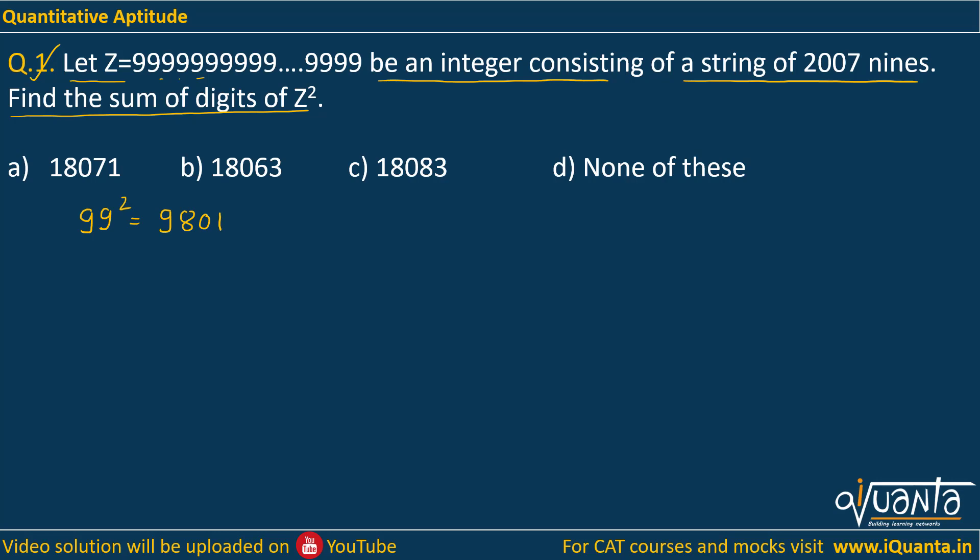But here in this question we have to multiply Z to Z, that means we have to multiply 2007 times 9 to 2007 times 9. So that becomes a huge problem. But if we try to find out a particular pattern, like we just found 99² is 9801. If I write triple nine squared, it will be 998001. So this is the value of 999². Similarly, if you find out 999999², then its value will be three nines, then 8, then triple zero, then 1.